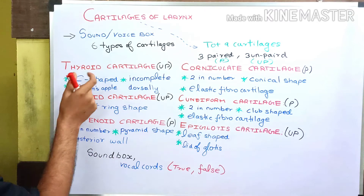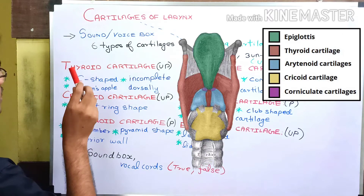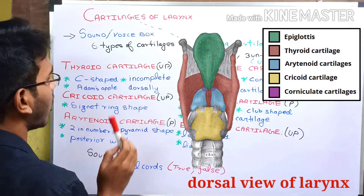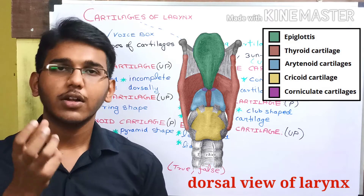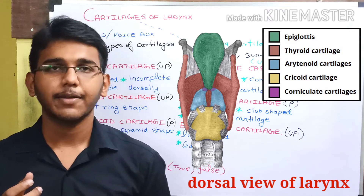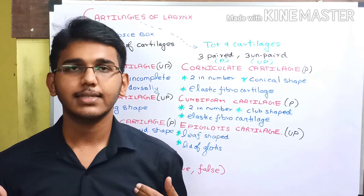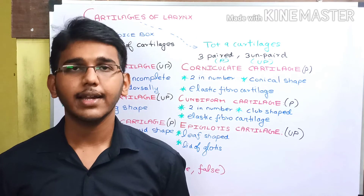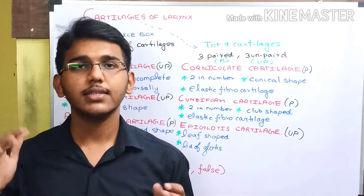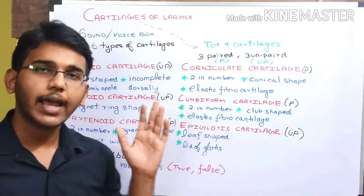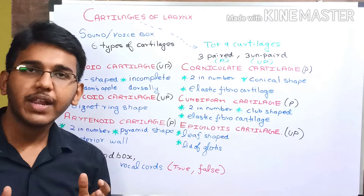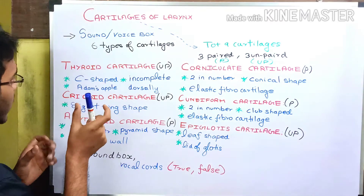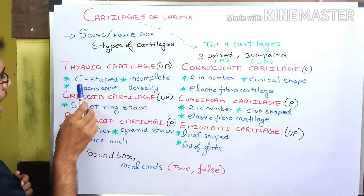First, we have the thyroid cartilage. It is a C-shaped cartilage and it is incomplete dorsally — the biological term dorsal means back side. The front side of the body is the ventral side and the back side is the dorsal side. So this thyroid cartilage is incomplete at the back side of the larynx. This thyroid cartilage is also called Adam's apple.